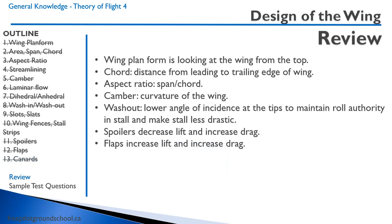Let's review. The wing planform is the view of the wing looking from the top. Wing chord is the distance from leading edge to trailing edge. The aspect ratio is the span divided by the chord. Camber is the curvature of the wing. Washout is the lower angle of incidence at the tips to maintain roll authority in a stall and make the stall less drastic. Spoilers decrease lift and increase drag, and flaps increase lift and increase drag.